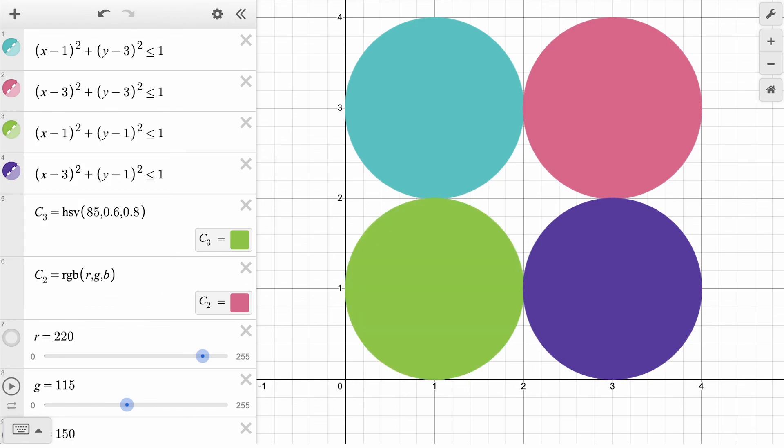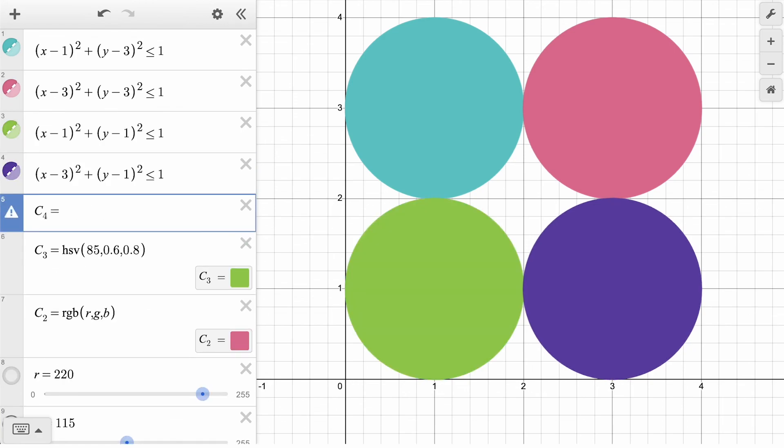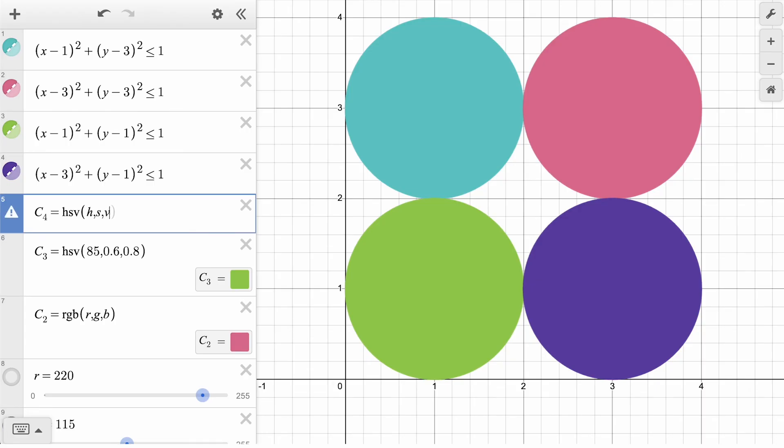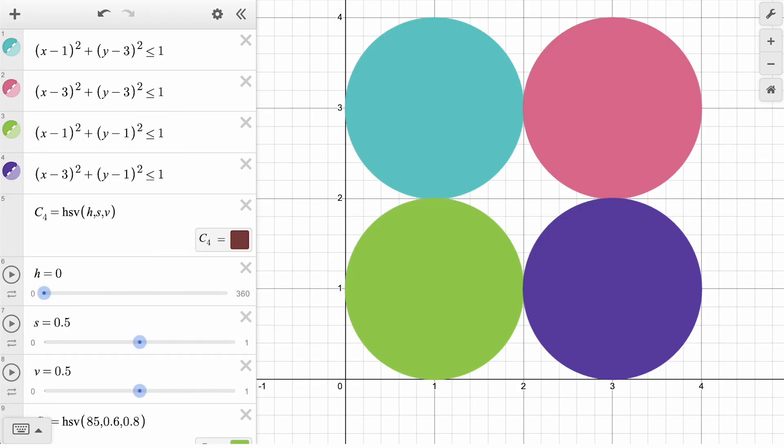To visualize each of these components, let's define our final color, C4, with sliders for H, S, and V. Notice that the interval for H is 0 to 360, but both S and V are 0 to 1. Changing the hue is like cycling through the colors of the rainbow. Saturation is the intensity of that color, and value is the lightness or darkness.